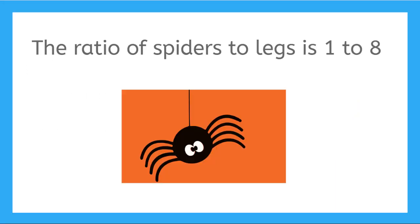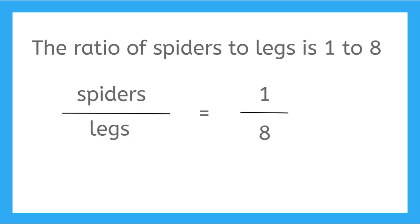In the last lesson called part-part-whole ratios, we talked a lot about how we can write ratios as fractions. Like the ratio of spiders to legs is one to eight, which we can write as one over eight.